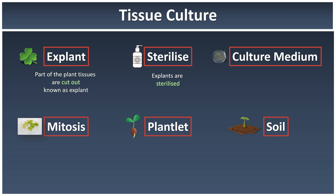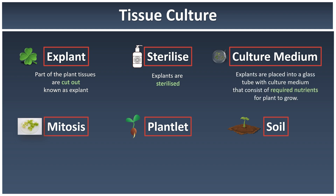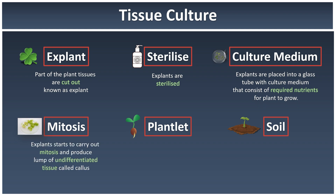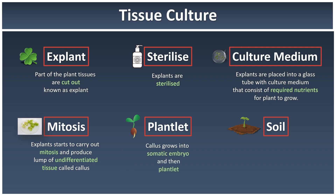Once sterilized, the explant is transferred into a glass test tube or petri dish containing the culture medium. The culture medium is a solution consisting of all the necessary nutrients for the plant to grow. This is where the plant carries on with mitosis and produces a lot of undifferentiated tissue — unspecialized cells that don't yet have a specific function, but serve as raw materials for cells to later become specialized.